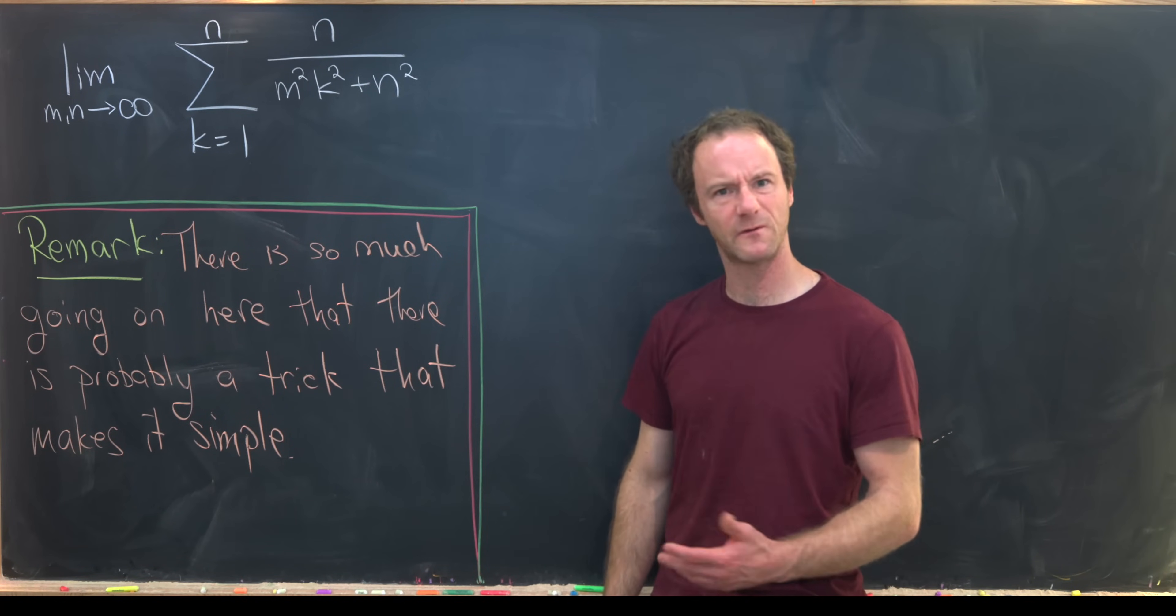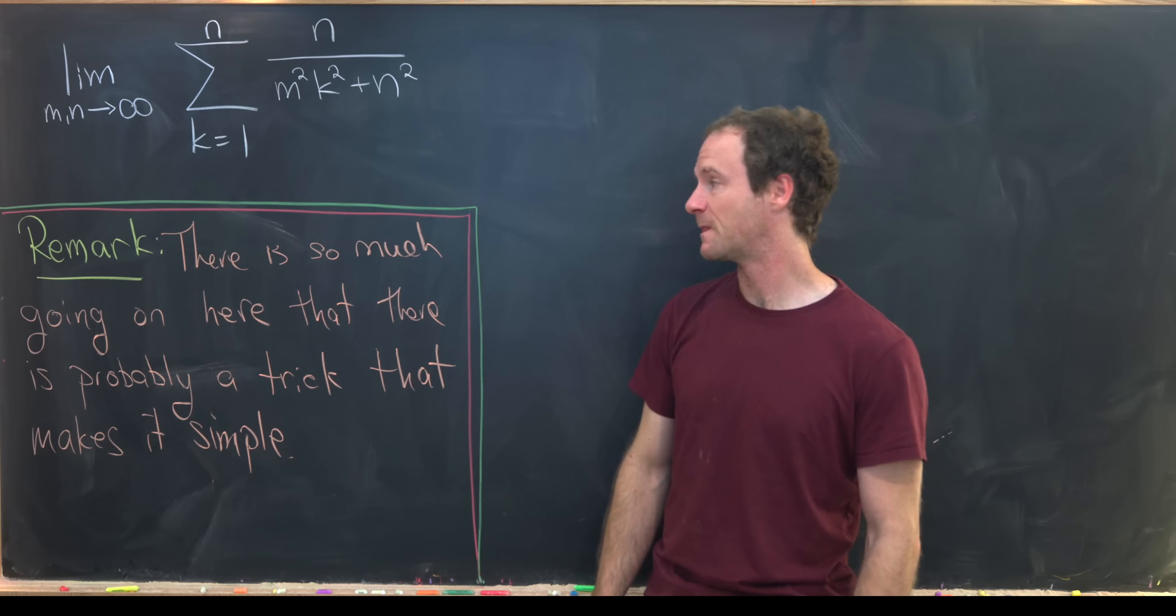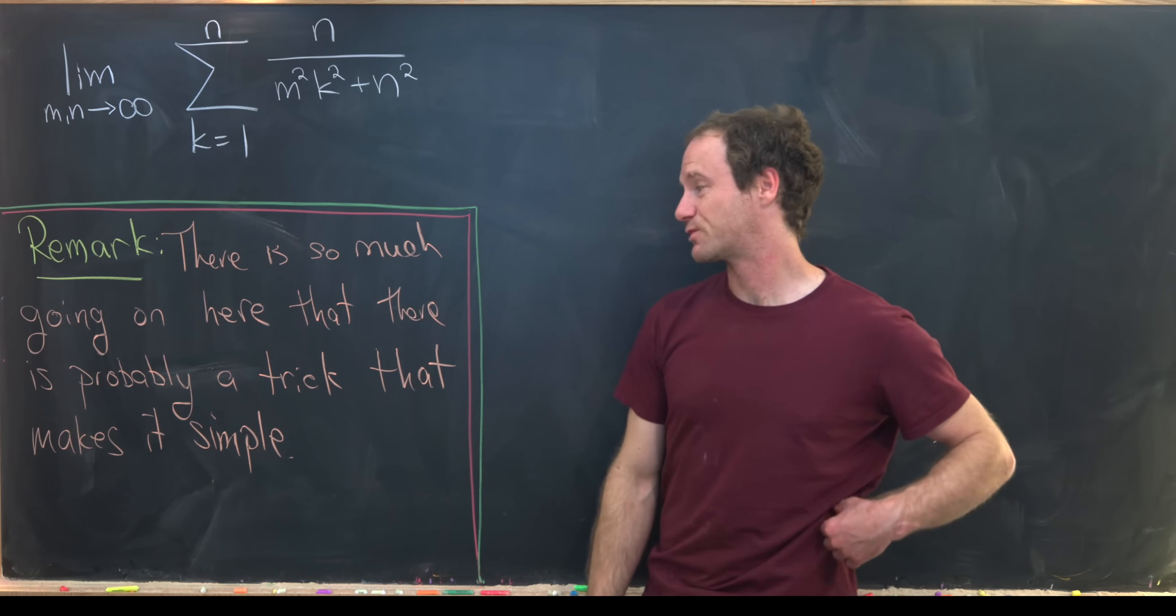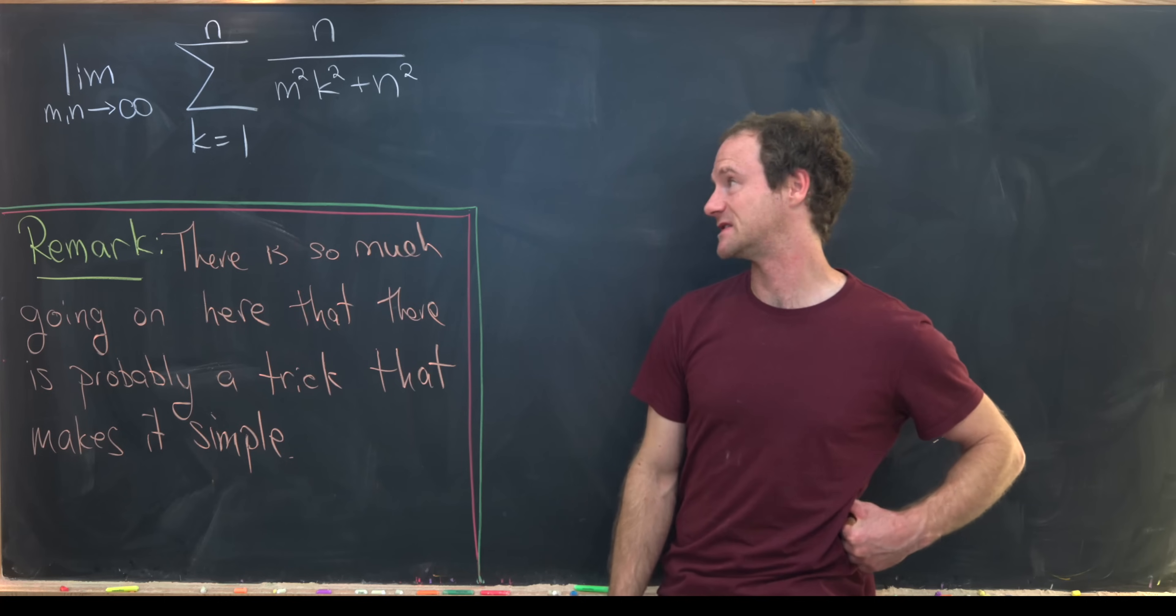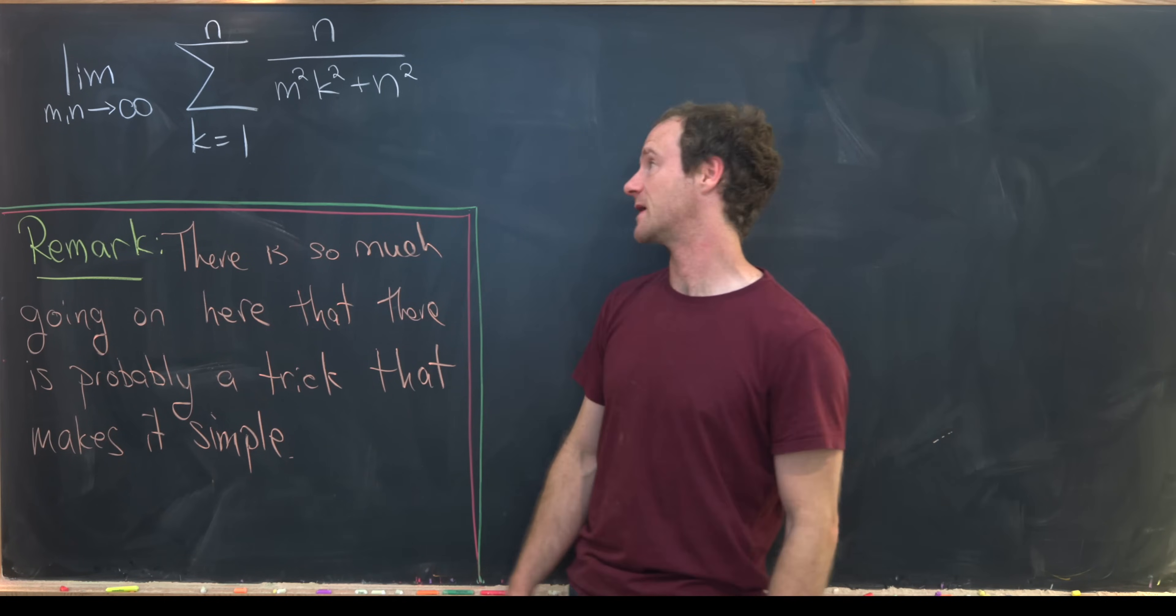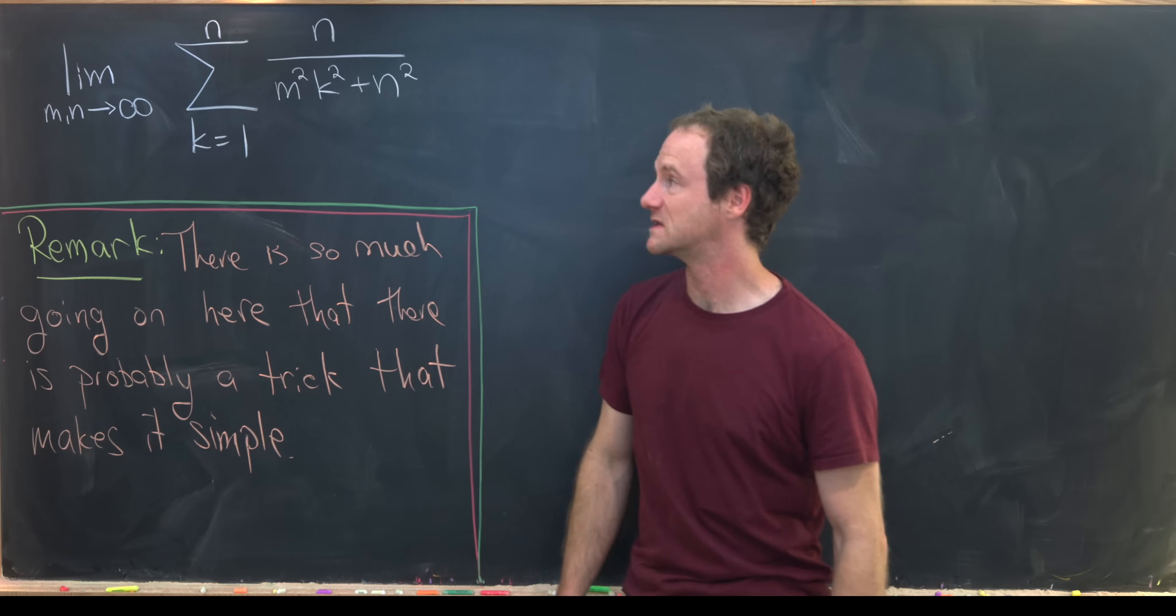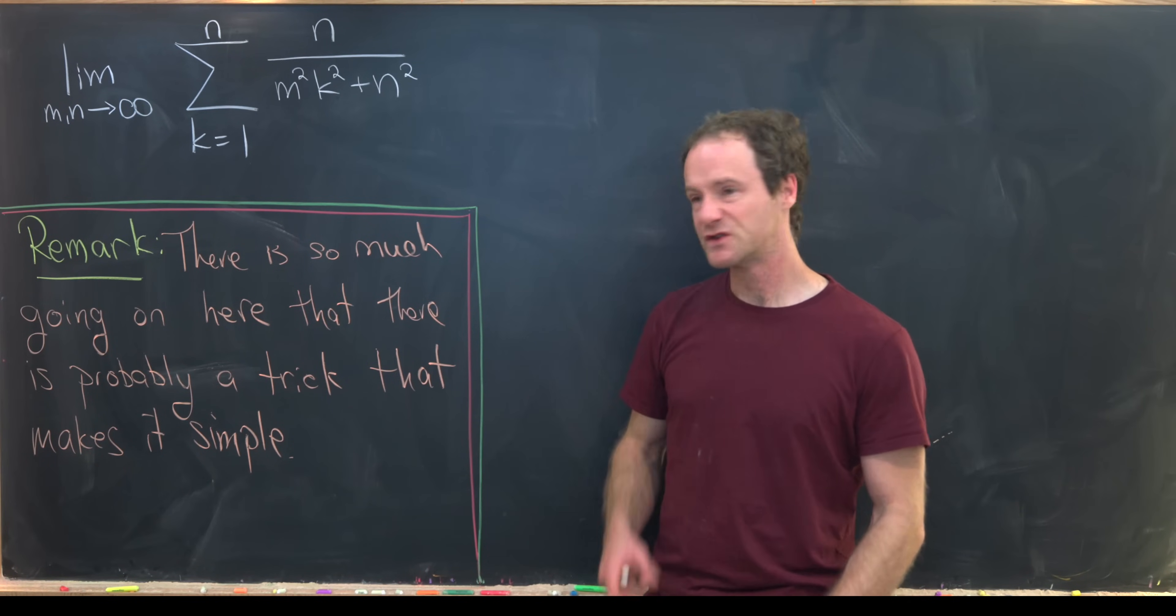I want to make a little remark about this problem before we jump into the solution. There is so much going on here that there is probably a trick that makes this simple. We've got this sum from 1 to n and then this double limit on the outside, so if this doesn't simplify quite a bit pretty easily, then this problem is super hard.